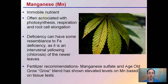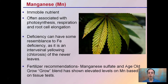Lastly, manganese (Mn) is an immobile nutrient often associated with photosynthesis, respiration, and root cell elongation. Deficiencies resemble iron deficiency with interveinal yellowing and chlorosis of the newer leaves, though it looks slightly different — a more even tone. Manganese sulfate is recommended, or Age-Old Grow, whose blend has shown elevated manganese levels based on tissue tests. By tissue testing your plants you can know exactly how a fertilizer may react, and what to use if you notice the beginnings of a deficiency. The earlier you catch it, the quicker you can correct it and minimize impact on your end yield.